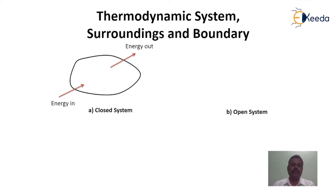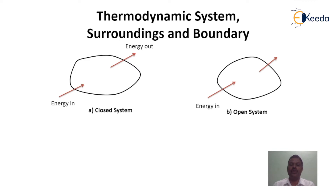Open system can be graphically represented in this way. If this is the boundary of the open system, there will be energy entering into the system and energy going out of the system across the system boundary. There will also be mass entering into and mass going out of the system across the system boundary.